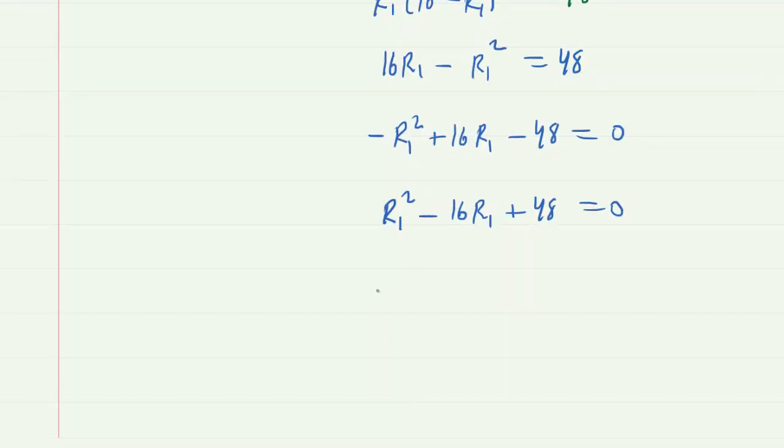And it turns out that this equation actually conveniently factors. If yours doesn't you might want to use the quadratic formula. But in this case we'll have R1 minus 4 multiplied by R1 minus 12 is equal to 0. And this works of course because minus 4 and minus 12 multiply to a positive 48. But they also add to make a minus 16.